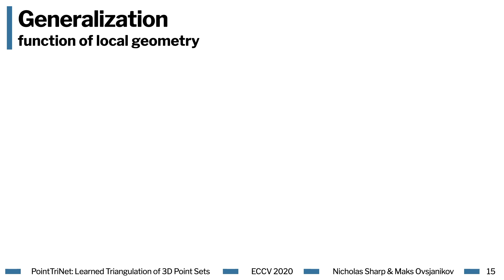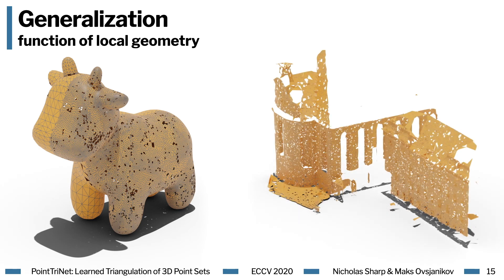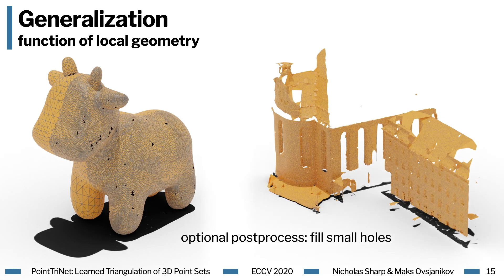Because the functions we learn are just functions of the local geometry, networks trained on ShapeNet can be immediately applied to very different kinds of data. On the left is a synthetic shape, and we see that PointTriNet even automatically adapts to varied sampling density. On the right we triangulate a range scan of a cathedral. Note that in some settings, the small holes remaining after our method runs might be undesirable, but these can be greatly mitigated with a simple hole-filling procedure as a post-process.